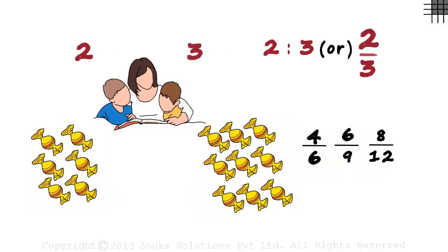A few students have this confusion that the ratio of 2 by 3 will mean Gaurav has just 2 chocolates and Jai just 3 chocolates.